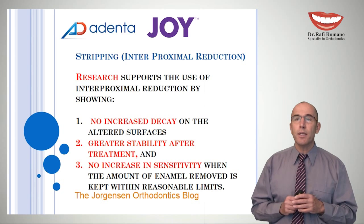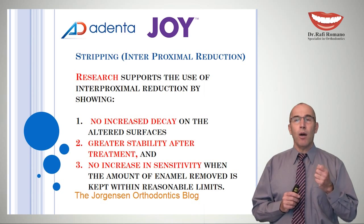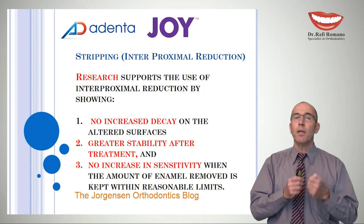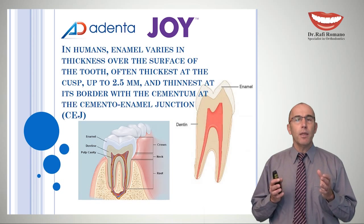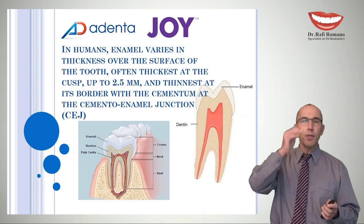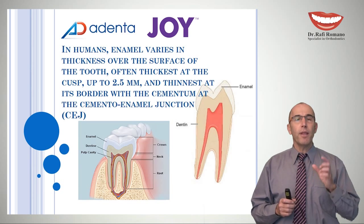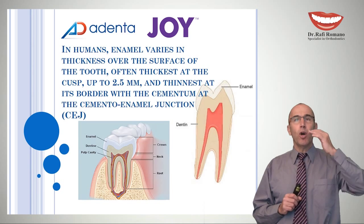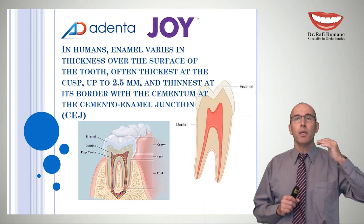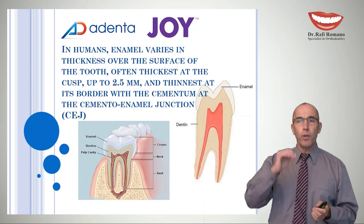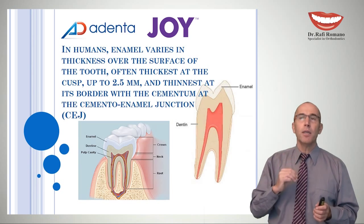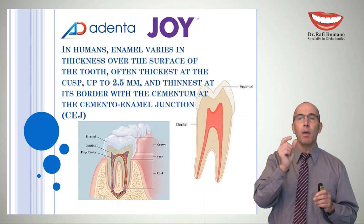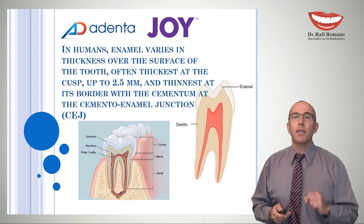There is no increase in sensitivity when reasonable limits are kept. Enamel thickness varies over the tooth surface — at the cusps it can be up to two and a half millimeters, becoming thinner toward the cementoenamel junction. When doing IPR, it is mostly recommended to work above the contact point where the enamel is widest.